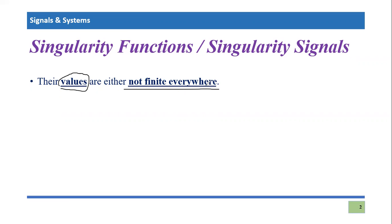When we say 'not defined,' it means they have infinite values, or their values simply do not exist. For example, it may happen that a signal is defined at time equals zero, but at time equals 0.1, it has a discontinuity or does not have any value. This characteristic is called singularity, and a signal having these characteristics is known as a singularity signal or singularity function.